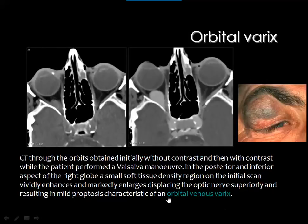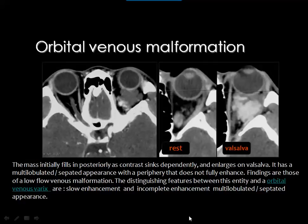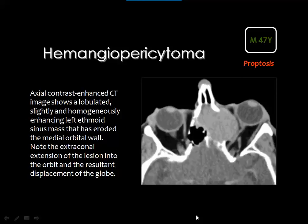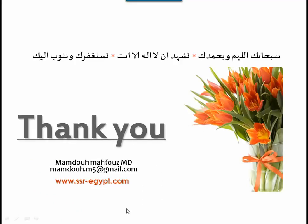To diagnose orbital varix: compare a scan without contrast injection to a scan with contrast and Valsalva maneuver, showing significant enhancement and distension of the varix. The orbital venous malformation differs from orbital varix in that it is an accumulation of multiple venous channels that may distend with Valsalva but not all lesions enhance significantly with contrast. Hemangiopericytoma is a vascular lesion that can affect the head and neck, arise inside the orbit, or extend from the nearby cavernous sinus into the orbital cavity.